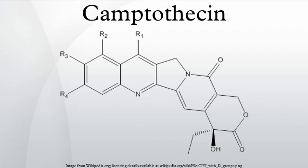Camptothecin is a cytotoxic quinoline alkaloid which inhibits the DNA enzyme topoisomerase I. It was discovered in 1966 by M.E. Wall and M.C. Wani in systematic screening of natural products for anti-cancer drugs. It was isolated from the bark and stem of Camptotheca acuminata, a tree native to China used as a cancer treatment in traditional Chinese medicine.